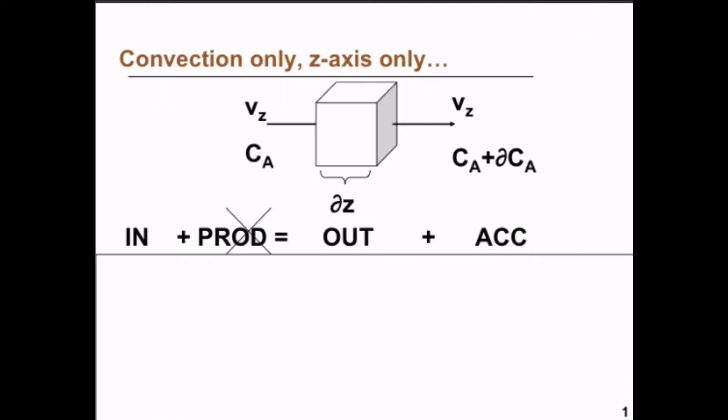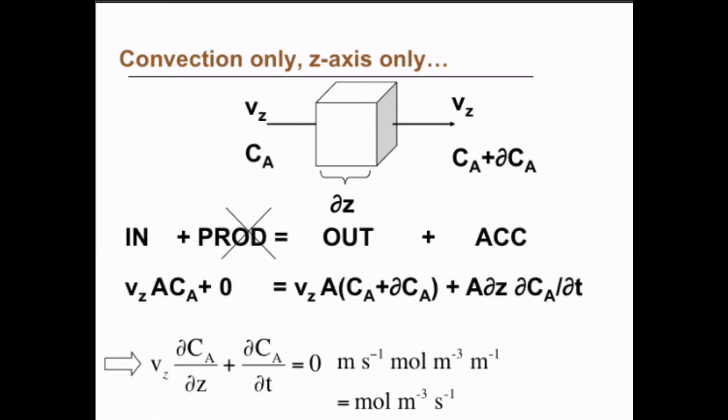So let's first ignore the reaction and diffusion and have convection only, and only convection in the z-axis direction. So on one side of the cube here we have a concentration CA. On the other side we have CA plus δCA. So what comes in through convection is simply Vz times CA, times the area to get the right unit. And then on the other side we have convection out: Vz times CA plus δCA because we have a different concentration here than on the left side, and then we multiply with the area. And then we have the accumulation term. A dz is simply the volume, and then δCA/δt. And we had no production term, so that's zero. And we end up with this equation: Vz ∂CA/∂z plus ∂CA/∂t equals zero mole per cubic meter and second.